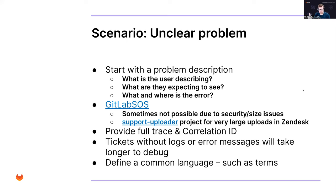We also need to define a common language — not about spoken language, but about terms. If someone says their runners aren't working as expected, they need to be clear: is it a GitLab runner that's not running, or something in the pipeline not running on the runner? Defining common language and where things occur really matters. We need to get customers from that scared state to a savvy state.